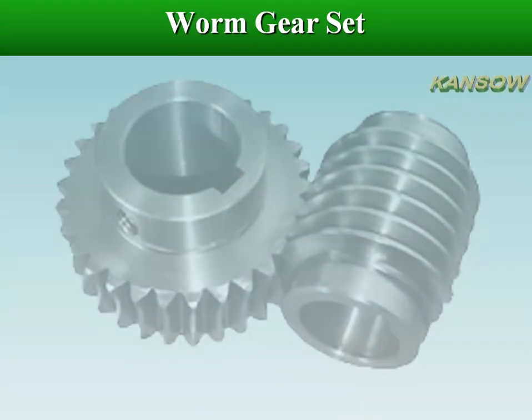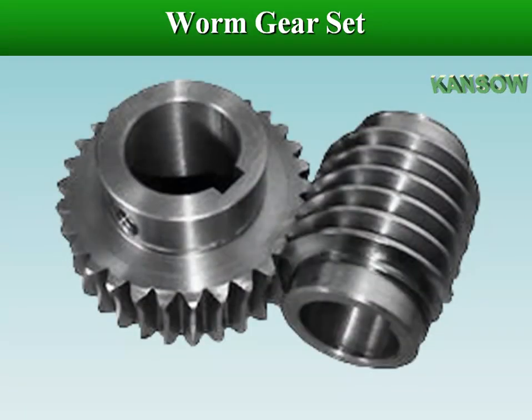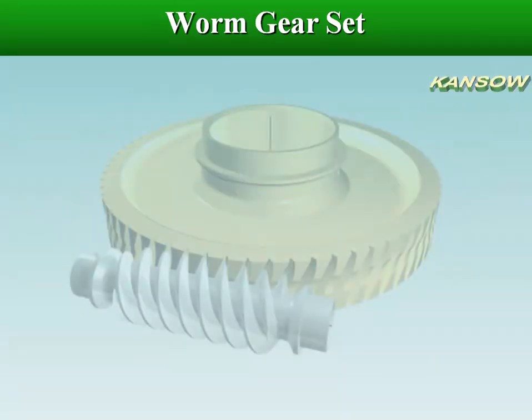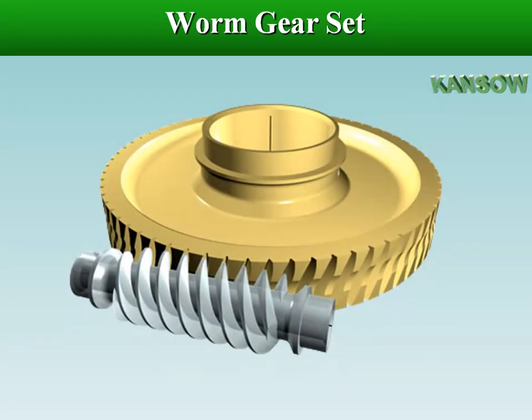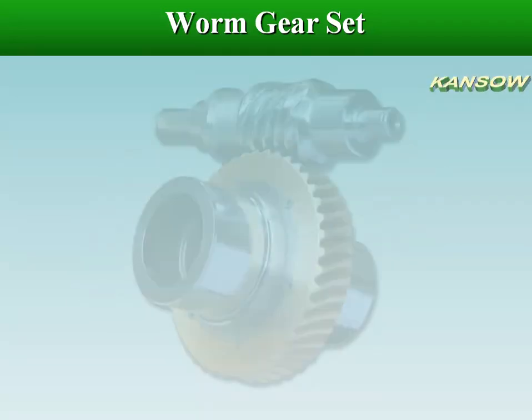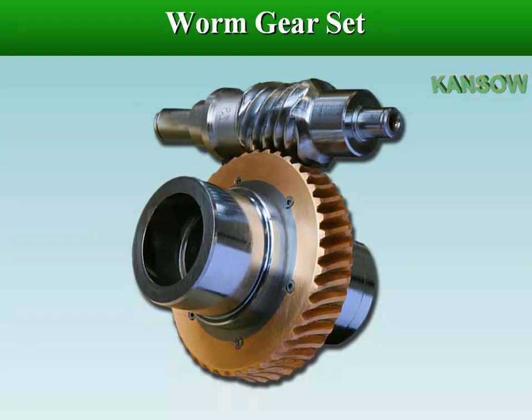Worm gearing is classified as non-interchangeable, because a worm wheel cut with a hob of one diameter will not operate satisfactorily with a worm of a different diameter, even if the thread pitch is the same.